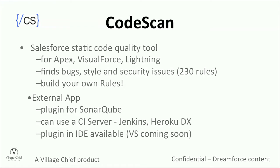CodeScan is a static code analysis tool for Salesforce code to help you improve the quality of your code. It does this by taking your Apex, Visualforce, Lightning, and Aura code, looking for patterns in the code, and it tries to identify bugs and style issues, security vulnerabilities, quality issues with your code. With 230 rules built in, and if those aren't enough, you can also build your own rules.